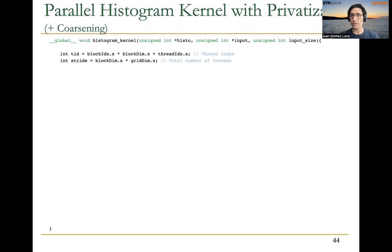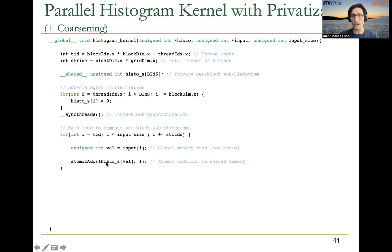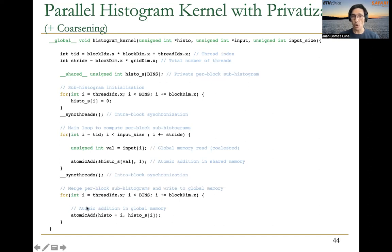The parallel histogram kernel with privatization and coercing looks like this. First, we declare the thread index and the total number of threads, then the private per-block sub-histogram in shared memory, which we initialize first and synchronize after initialization is done. Then we go to the main loop where the threads of each thread block compute the per-block sub-histogram — reading input values and updating the corresponding histogram bins in their shared memory. After they are done with the sub-histogram, they synchronize and we do the final reduction using atomic operations in global memory. Even though atomic operations to global memory are more costly, this final part will be a negligible portion of the entire execution time — most time is spent in the main loop.